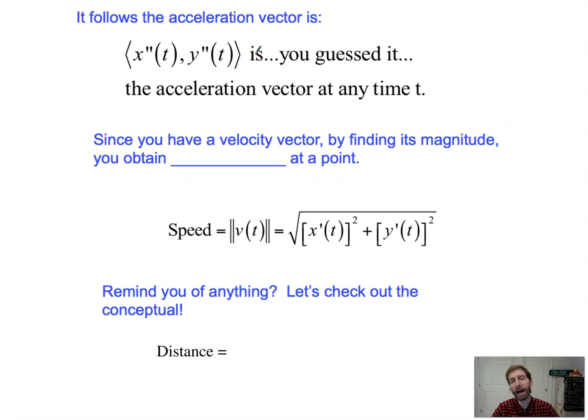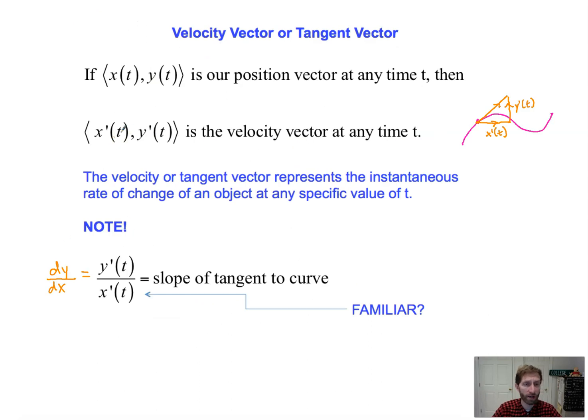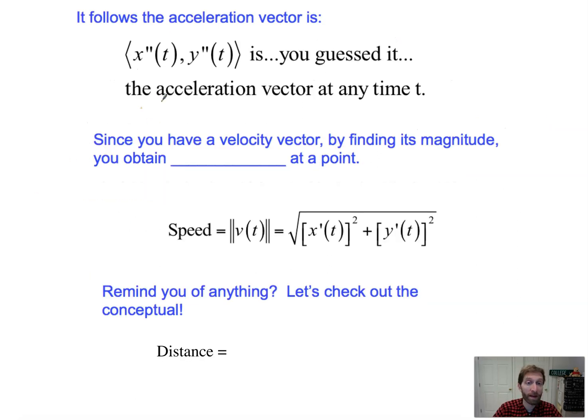So it then follows that if the velocity vector is x prime of t and y prime of t, the acceleration vector is x double prime of t and y double prime of t. It's literally just the components of how these values are changing. The rate at which x is changing is velocity, and the rate at which that is changing is acceleration. The rate at which y is changing is y prime. The rate at which that is changing is y double prime. You take two derivatives of the x component and the y component, you got acceleration vector.